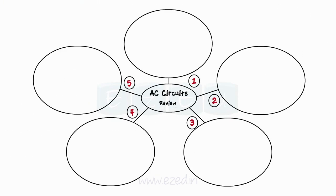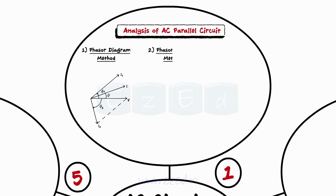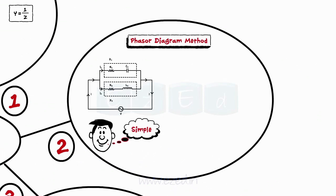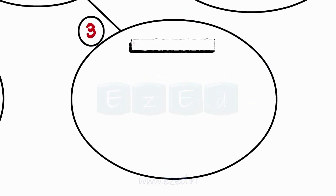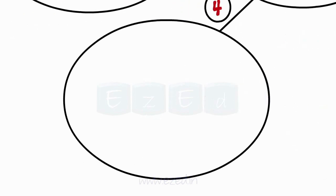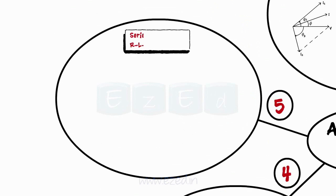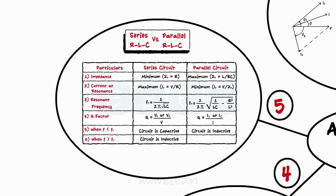Let's have a quick review of what we've learned in this lecture. The AC parallel circuits can be analyzed by three main methods: the phasor diagram method, the phasor algebra method, and the admittance method. The phasor diagram method is useful only for simple circuits; for circuits having three or more parallel branches, it increases complexity. In the phasor algebra method, algebraic addition or subtraction of phasors simplifies the process. The admittance method — where admittance is the reciprocal of impedance — makes finding equivalent impedance of multiple parallel branches much easier. For series RLC and parallel RLC circuits, we can compare parameters like impedance, current at resonance, Q factor, etc., as shown in the table.